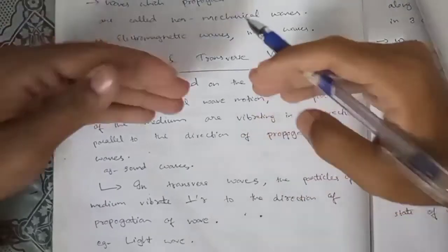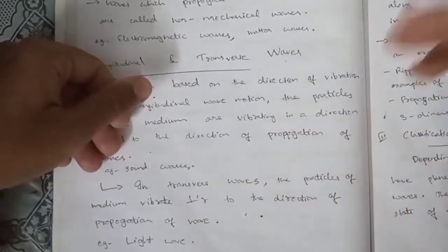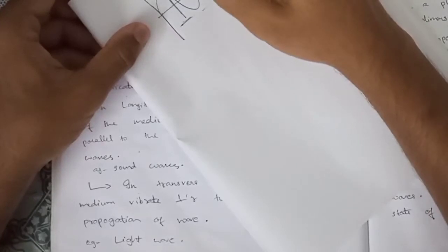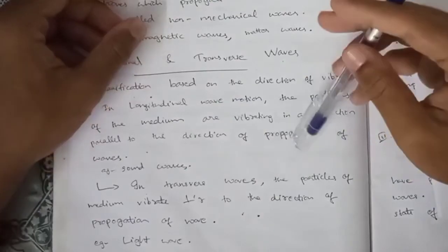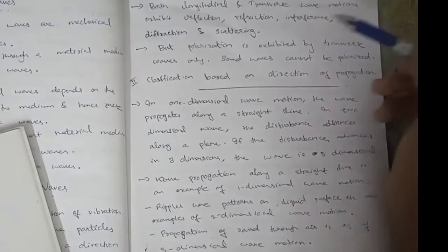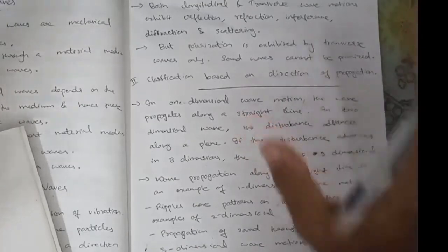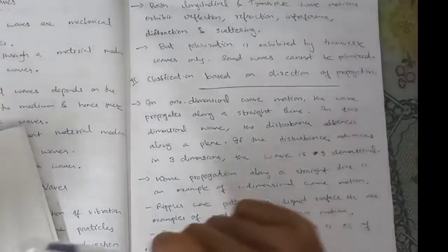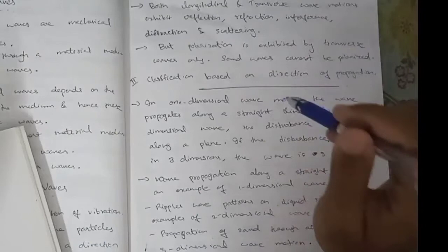Transverse waves are waves where the particle vibration is perpendicular to the direction of propagation of the wave. An example is light waves. Both longitudinal and transverse waves exhibit reflection, refraction, interference, diffraction, and scattering. Additionally, transverse waves also exhibit polarization.